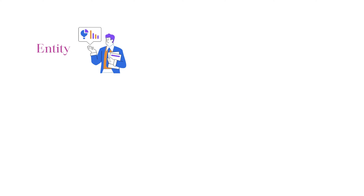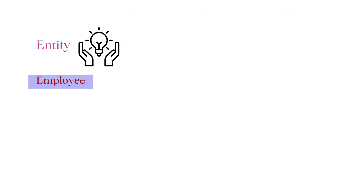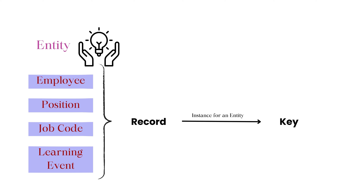An entity represents a distinct real-world concept or object within SAP SuccessFactors. For example, an entity can be an employee, a position, a job code, or a learning event. When we create a record in SAP SuccessFactors, it basically creates instances of these entities. Every record in SAP SuccessFactors has a unique identifier, like keys, that differentiates it from other records.